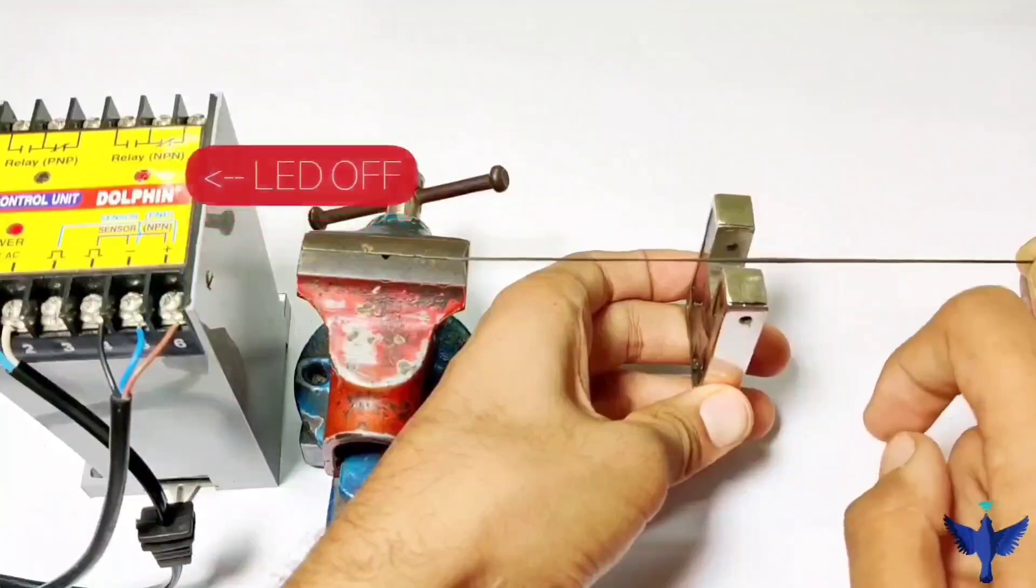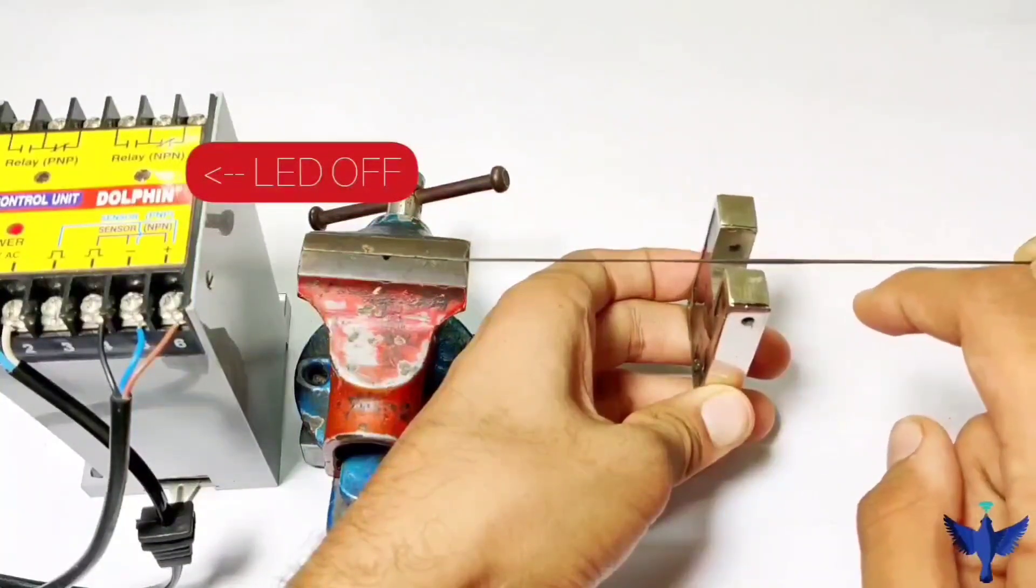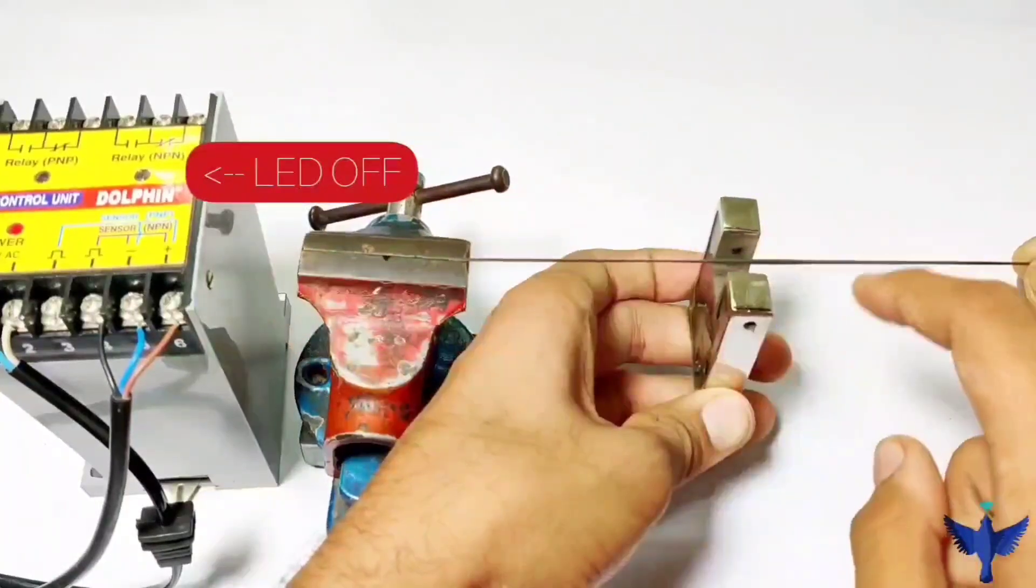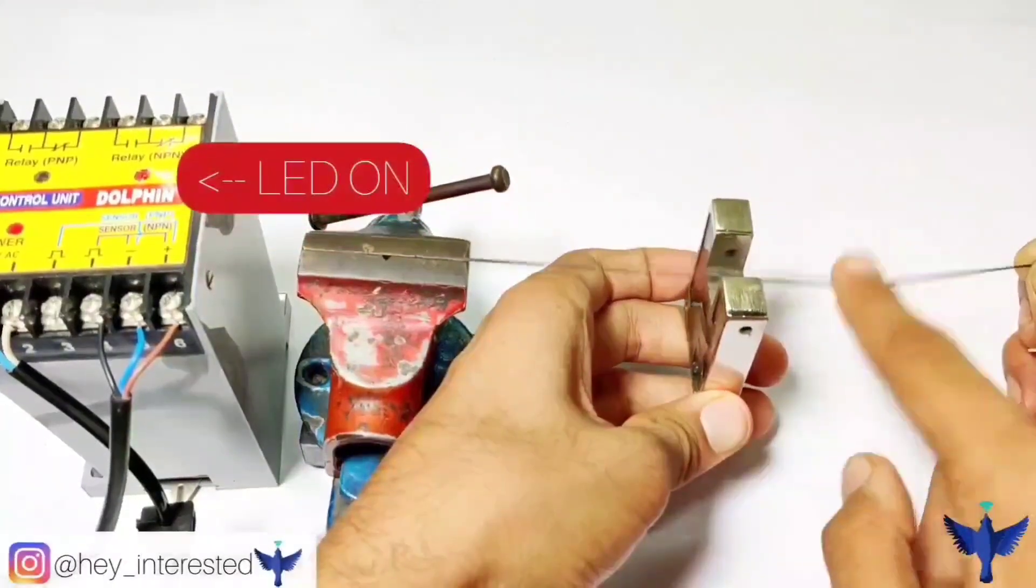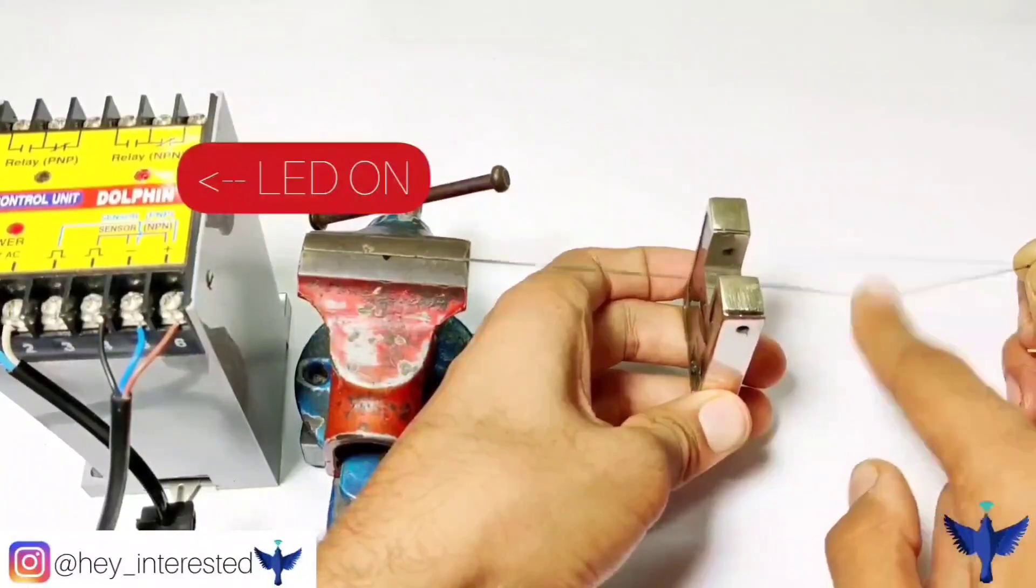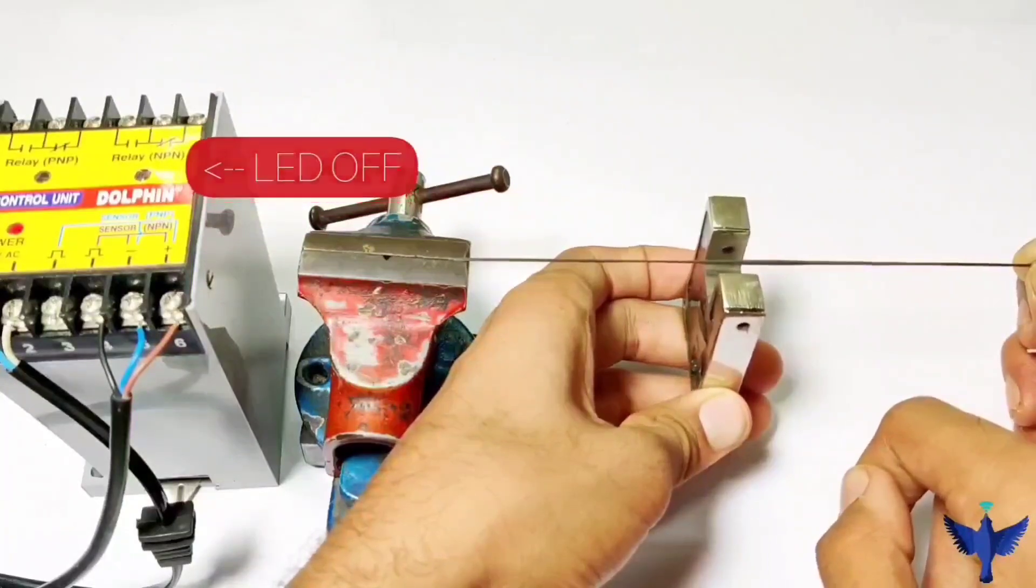When there is no vibration, which means the yarn or the thread is not winding up the reel, there will be no output. The output will be given only when there are vibrations. We can see that when there are vibrations in the sensor it gives an output, and when there is no vibration there is no output.